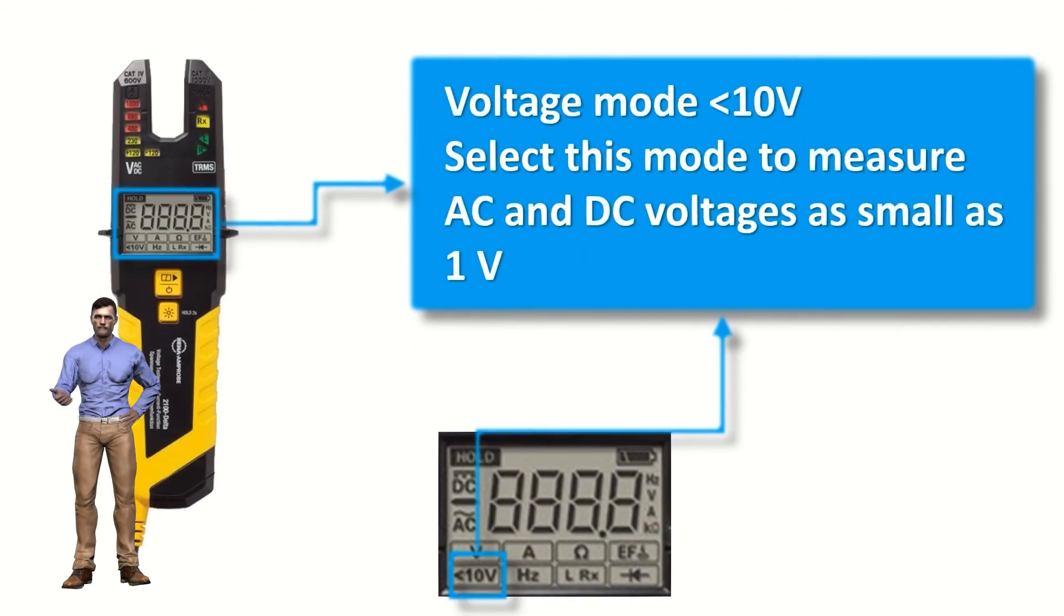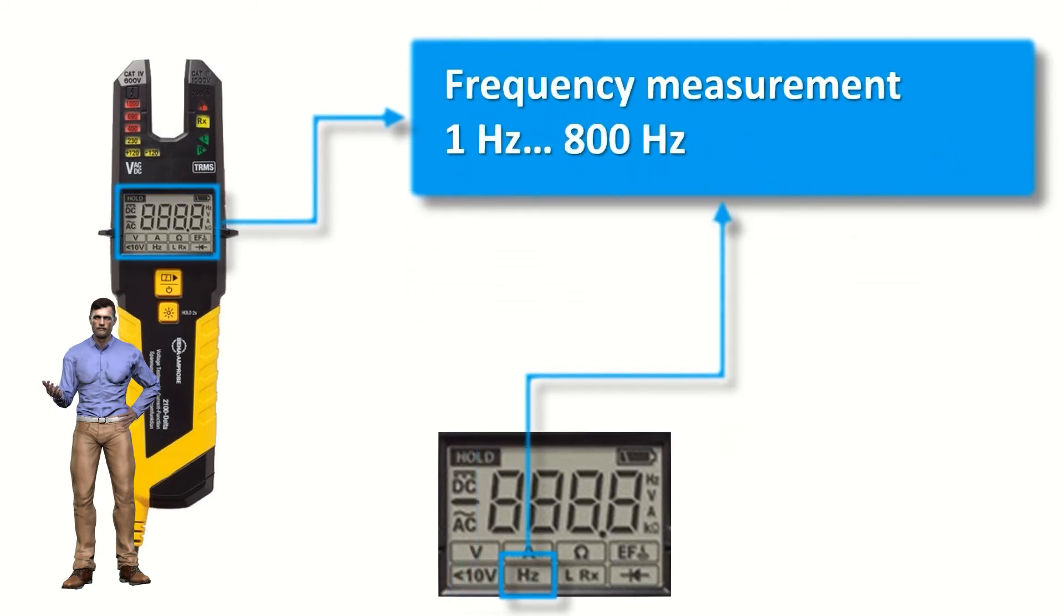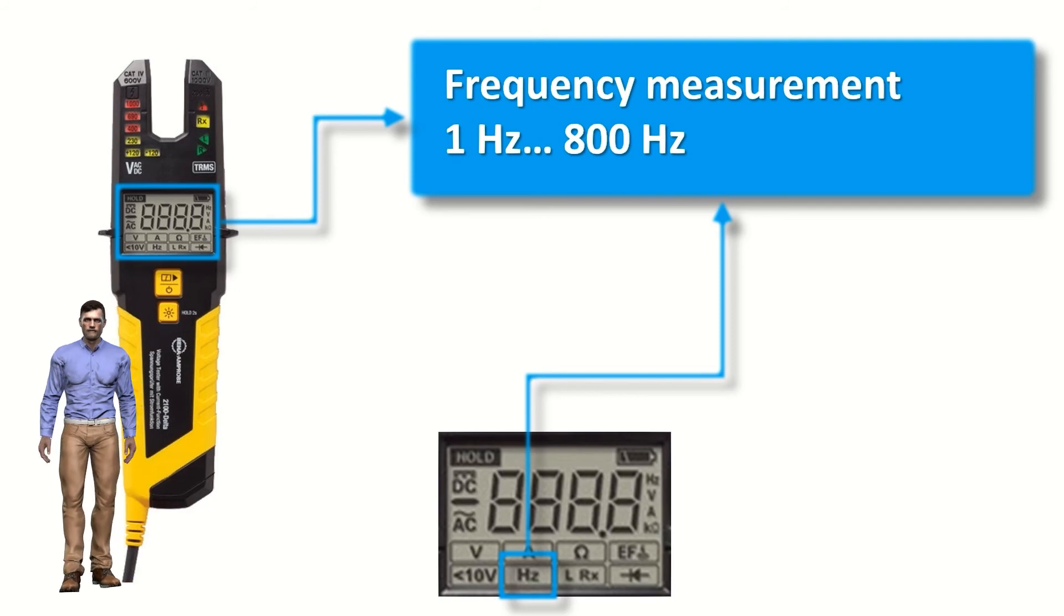To measure AC or DC voltages as small as 1 volt, we can select the following function that appears on the screen with the indication, less than 10. By pressing the selection button again, we can activate the function for measuring the frequency associated with the voltage, from 1 hertz to 800 hertz.